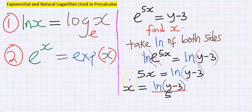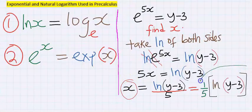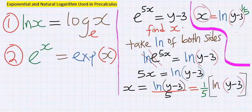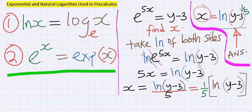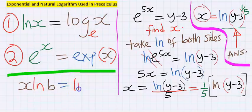5x is now free, now x is now isolated, and this can be simplified further. X can be simplified further like this, and this is the answer. Our final answer is this because x ln b, for example, equal to ln b to the power of x in this example.